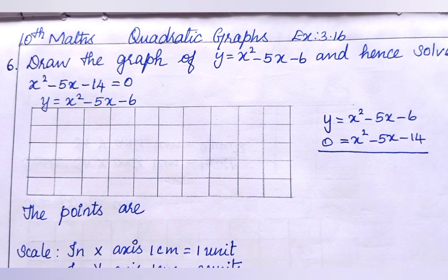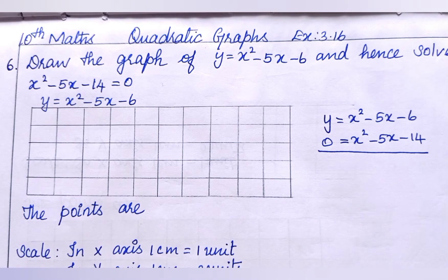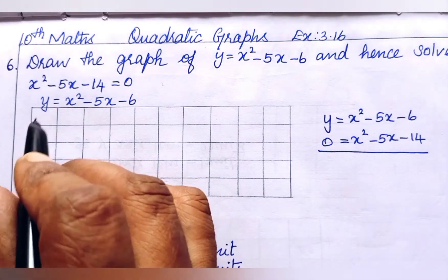Welcome to Max 360 children. This is 10th standard MaxLuck quadratic graphs exercise 3.166. The question asks us to draw the graph of y equals x squared minus 5x minus 6, and hence solve x squared minus 5x minus 14 equals 0.